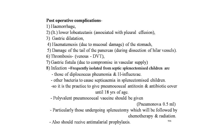Post-splenectomy infection is frequently caused by Diplococcus pneumoniae and Haemophilus influenzae. To ensure safety in splenectomized children, it is the practice to give pneumococcal antitoxin and antibiotic cover until 18 years of age. Polyvalent pneumococcal vaccine (Pneumovax, 0.5 ml) should be given preoperatively and postoperatively, particularly for those undergoing splenectomy followed by chemotherapy and radiation. Antimalarial prophylaxis should also be received.